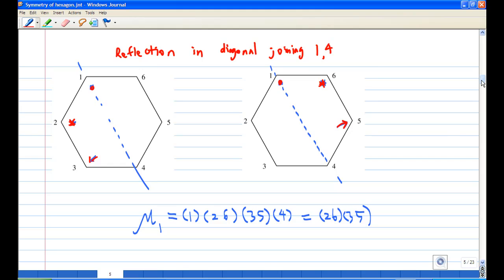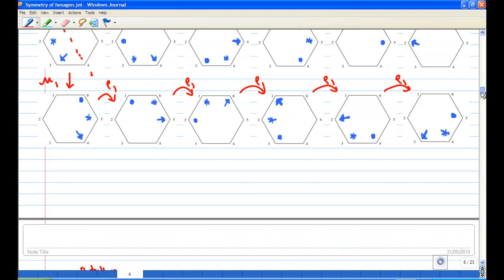All together there are 12 symmetries: 6 rotations and 6 reflections.